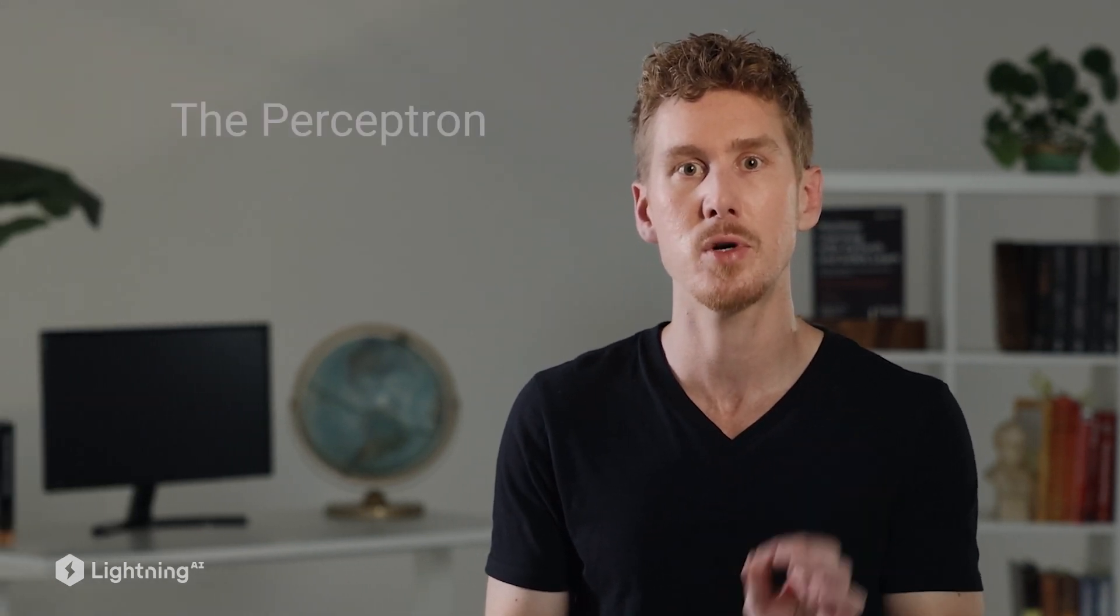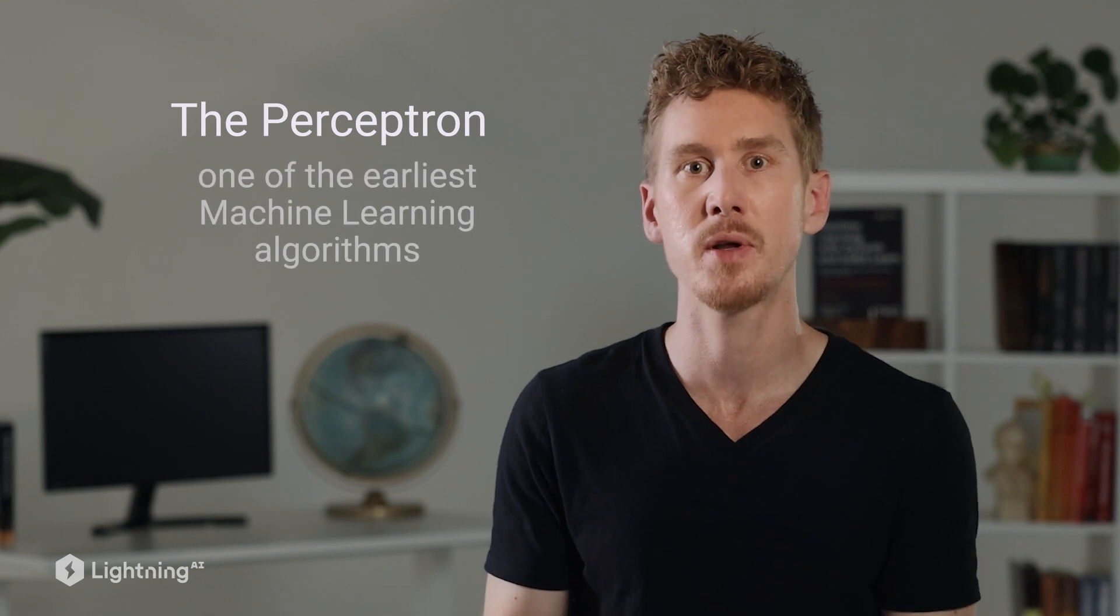So to see how this works, we will take a look at one of the first machine learning algorithms called the perceptron, which was invented about 70, 80 years ago. The reason why we are covering this algorithm is that it's one of the simplest ones, and it will be a good warm-up exercise when we implement this in code before we get to the more complicated deep learning models.